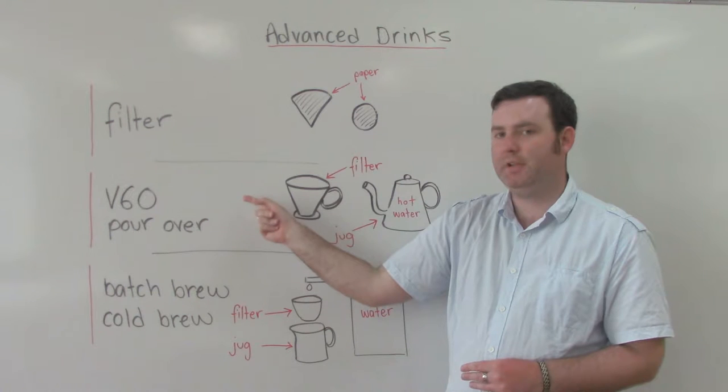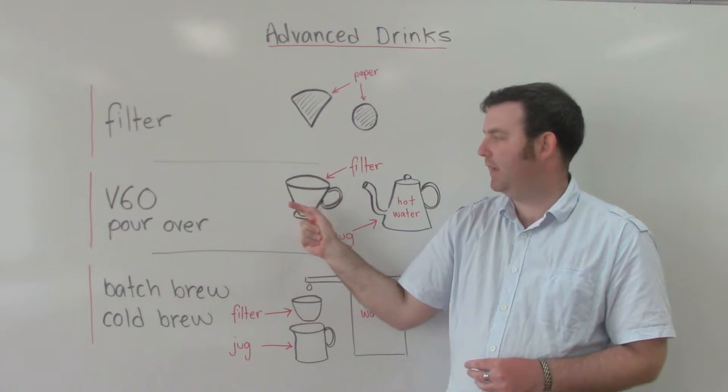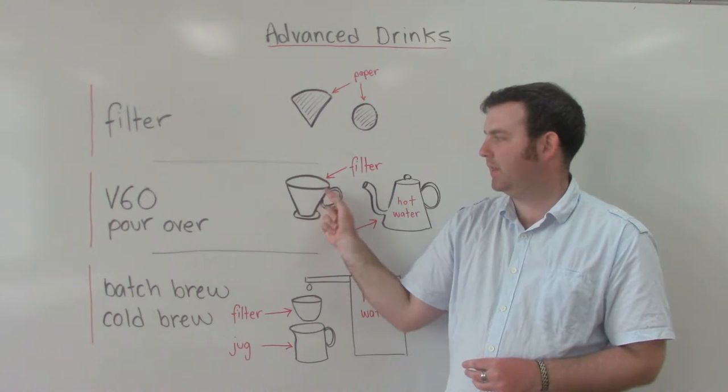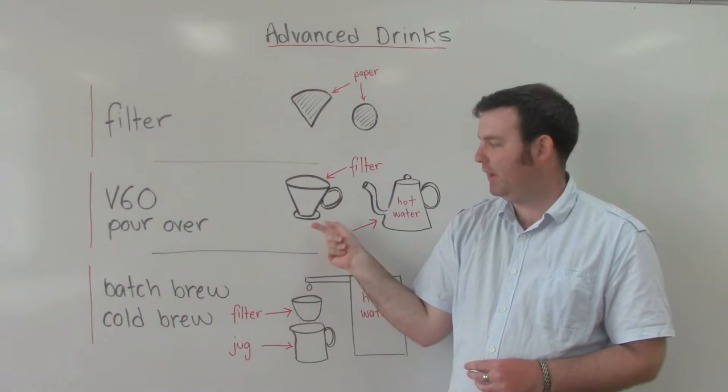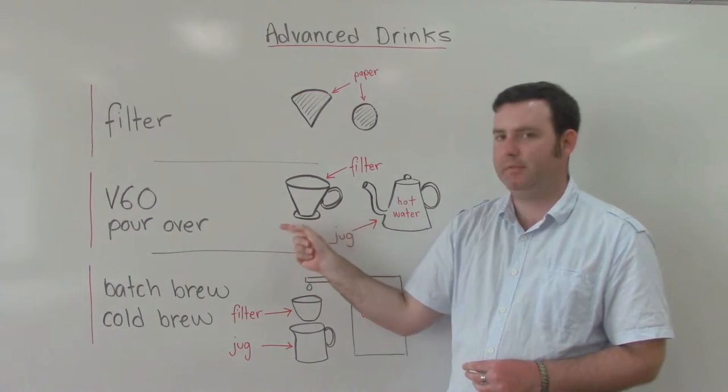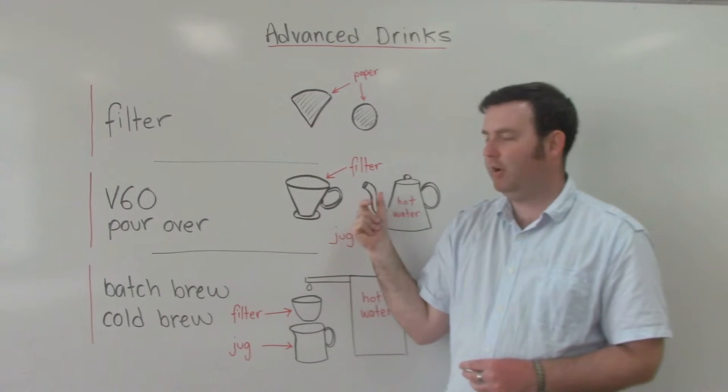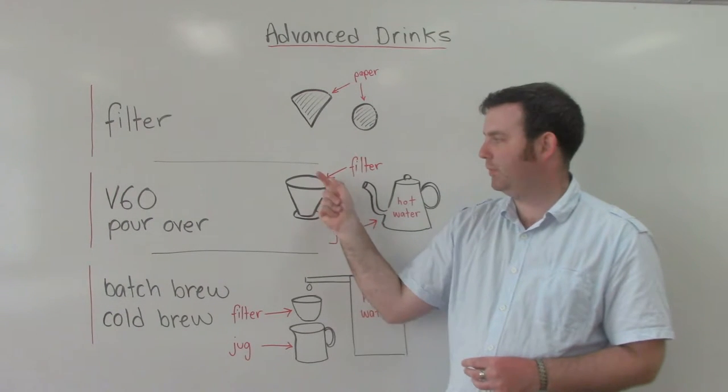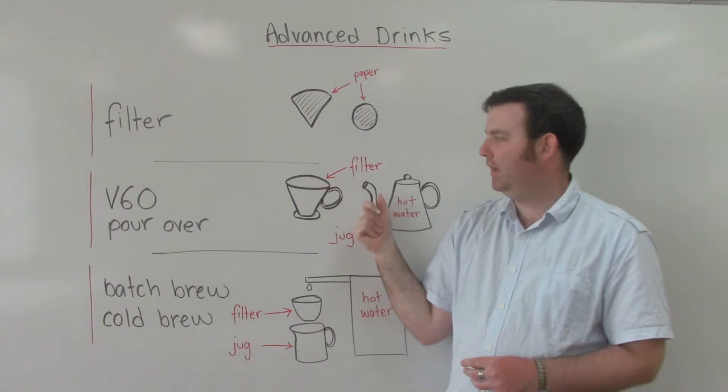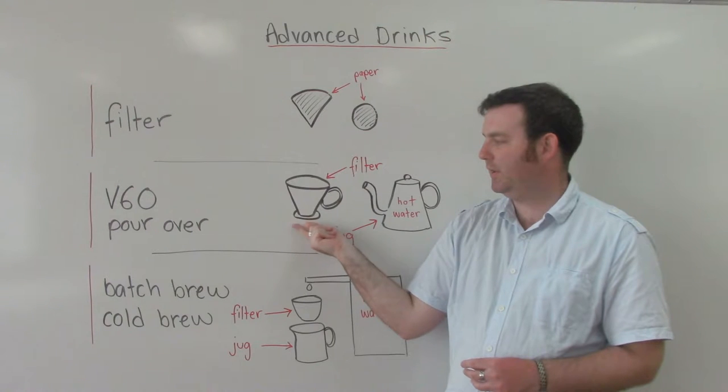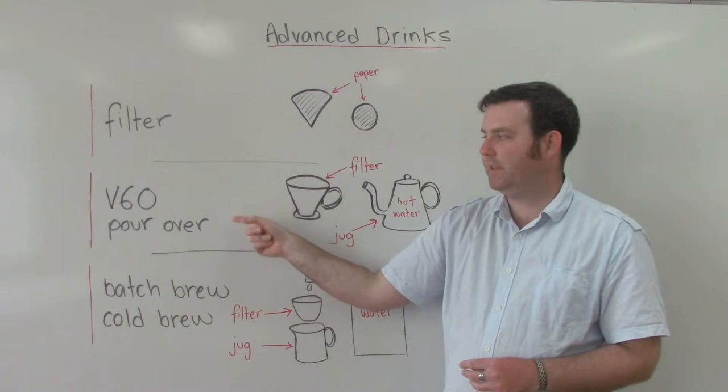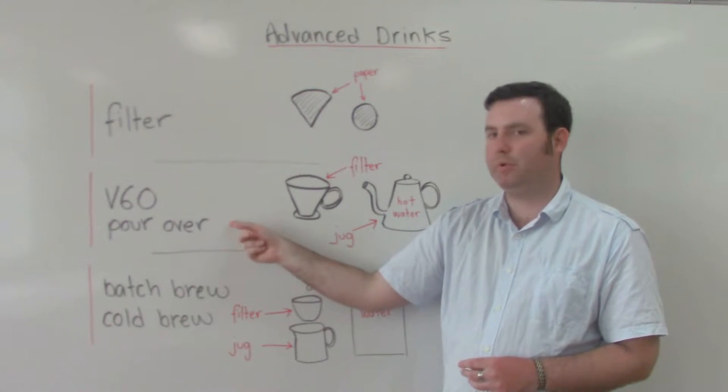The first drink is called a V60 and the filter sits inside here with the coffee. Hot water runs through here and ends up in a cup down the bottom. The hot water that we use to pour through here is in a pour over jug. So hot water runs through here in the cup. The V60 is sometimes called a pour over.